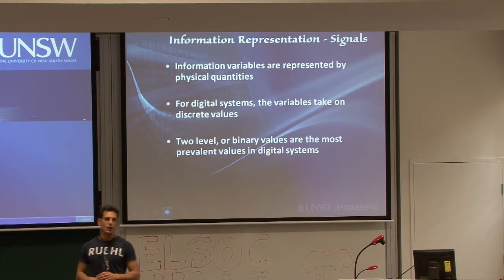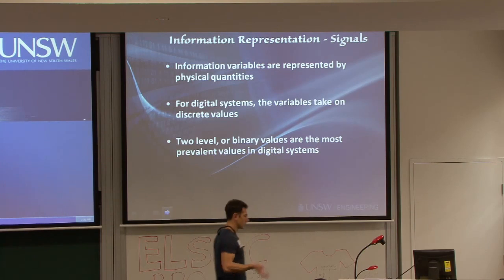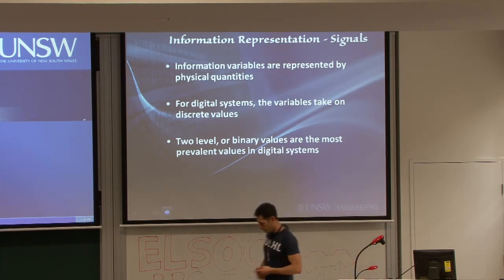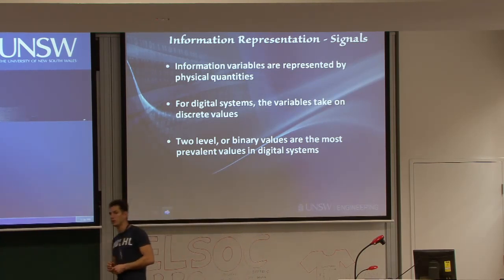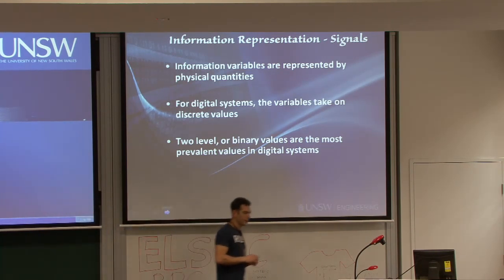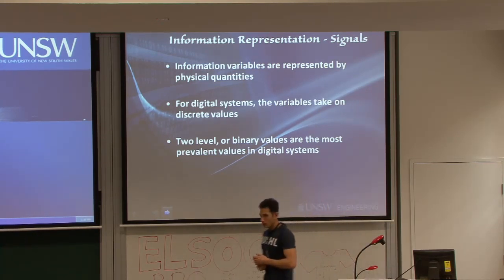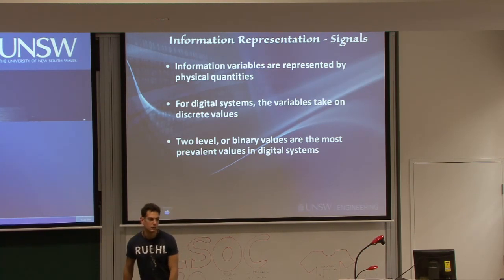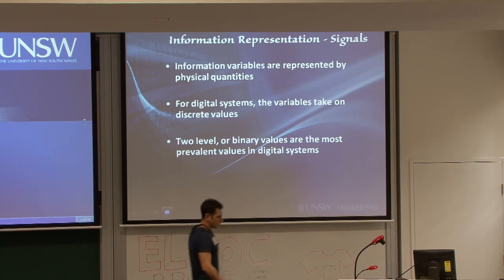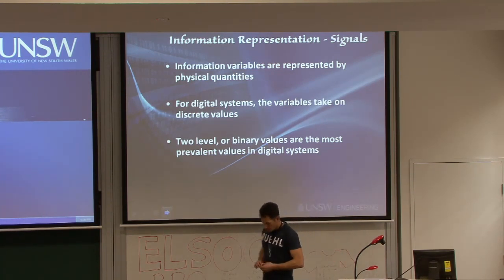When we talk about digital systems, we talk about discrete values. Back to temperature — when we say it's 32 degrees, we don't bother with all the decimal digits. We round it off to the whole degree or maybe one decimal place. This is when we start dealing with discrete quantities. There are a finite number of values we specify — say whole degrees between 0 and 40 — and that's what we call discrete.